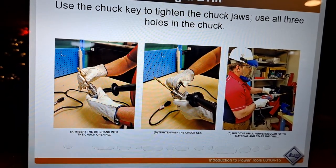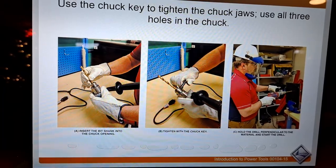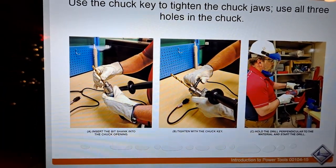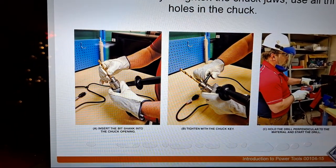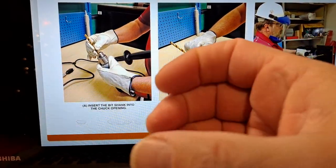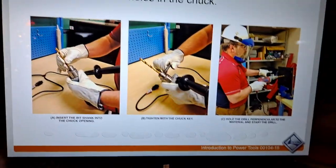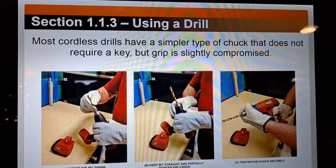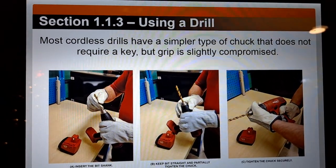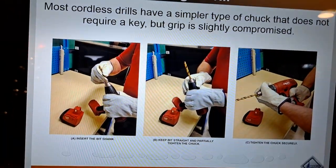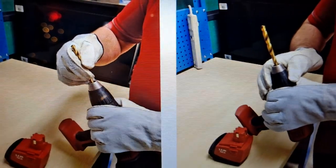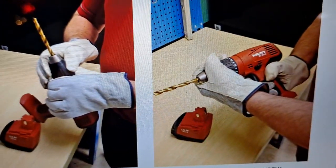Use the chuck key to tighten the chuck jaws. There are three holes in the chuck; insert the bit shank into the chuck opening and tighten with the chuck key. Hold the drill perpendicular to the material and start drilling. On a keyless chuck you just hand-tighten it. Most cordless drills have a similar keyless chuck that does not require a key, though the grip is slightly compromised.